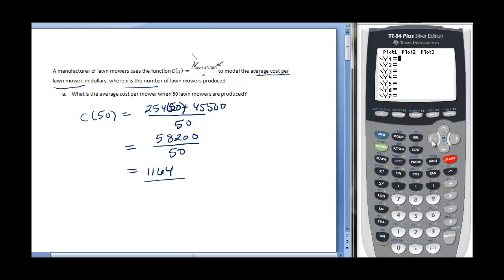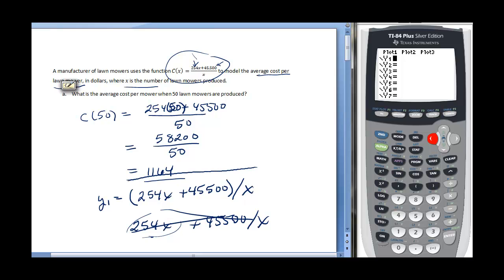Let's see if we can verify that on our calculator. If I put this rational function on my calculator, you want to be careful how you input it. When I input this, my Y1 equals, I want to put my numerator in parentheses. If you don't, then what your calculator is going to do is divide the 45,500 by X and then add it to this. You don't want this situation, you want to input it like this.